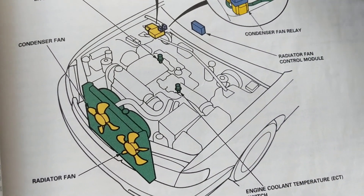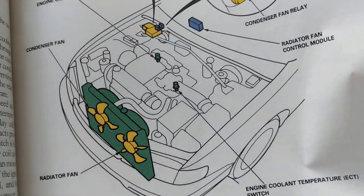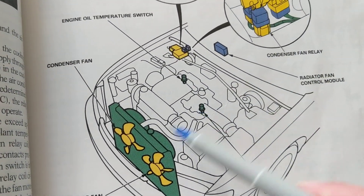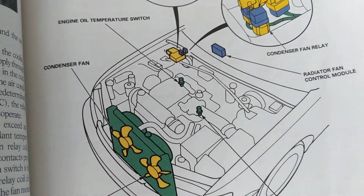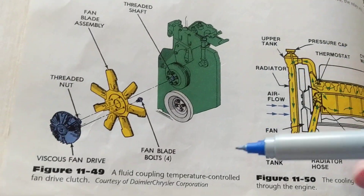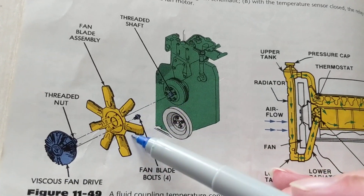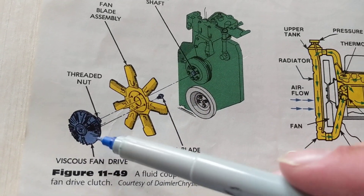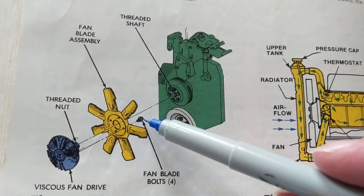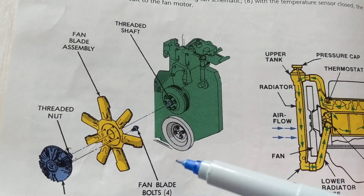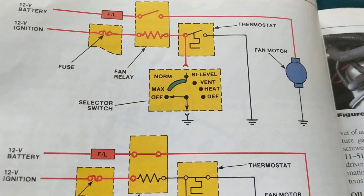In an SUV, for example, where you have the engine going the other way, you're not going to have electric fans. You're going to have something called a mechanical fan. The mechanical fan looks like this — some have what's called a viscous coupling — and that's the mechanical fan. Now let's discuss the electrical part of it.